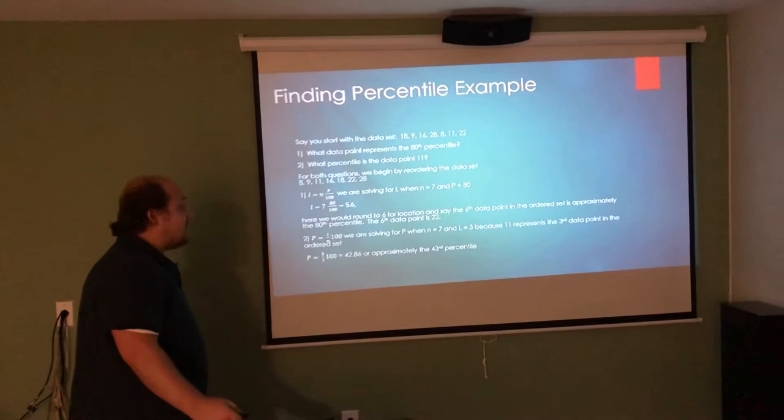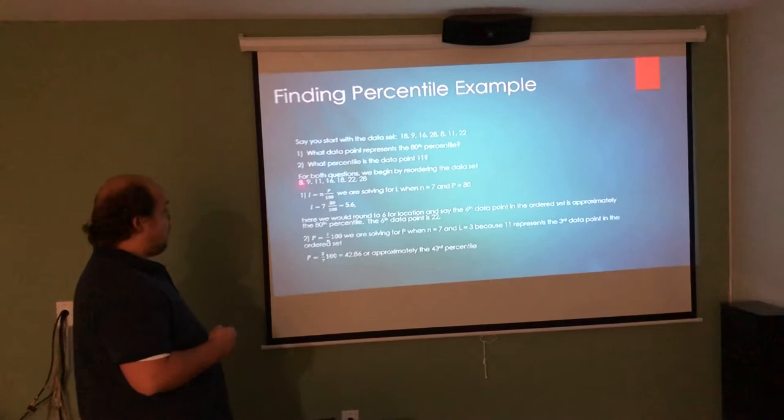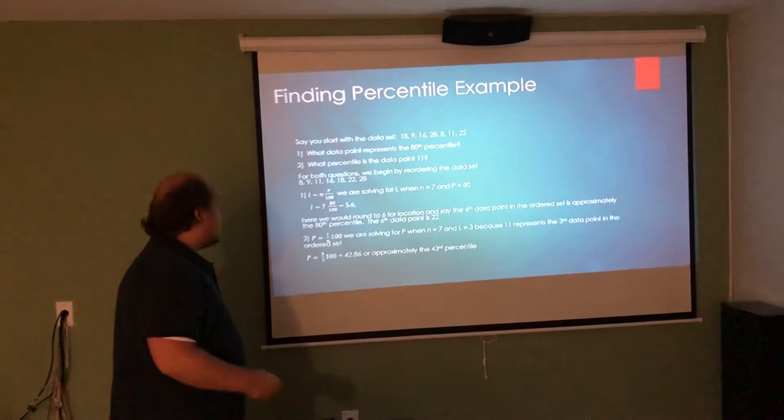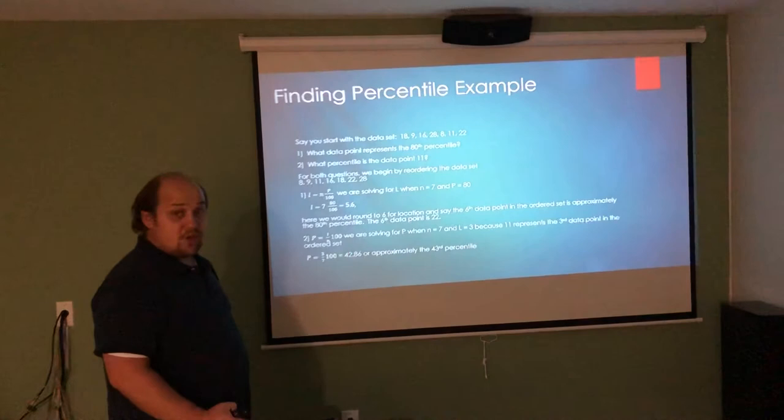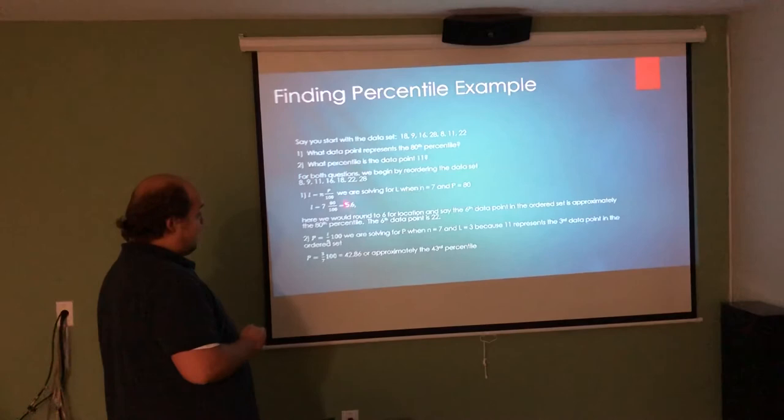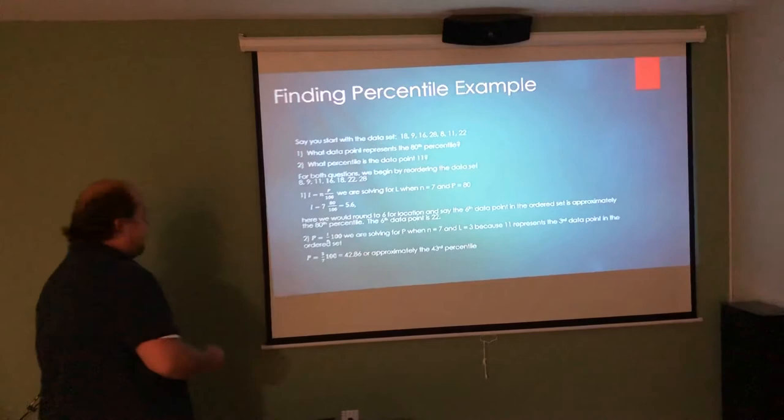For the first question, finding the percentile, the location of where we're looking for the 80th percentile. The location is returned by taking n. In this case, we have 7 data points. So 7 times the percentile we're looking for, which is 80, divided by 100. This tells us 5.6 is the location of the 80th percentile. We're not going to round when we do quartiles in the future, but for questions like these, I like to point to a specific data point. So since the 6 is 5 or higher, I'm going to round up and say what we're looking for is the 6th data point in the order of the list. The 6th data point is 22. So the 80th percentile is 22.